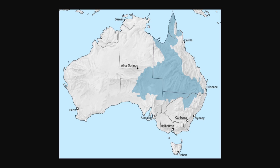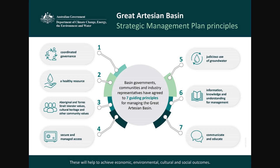Also, in 2020, the Australian Department of Climate Change, Energy, Environment, and Water created a Great Artesian Basin Management Plan, which today is helping maintain the water levels of this basin.